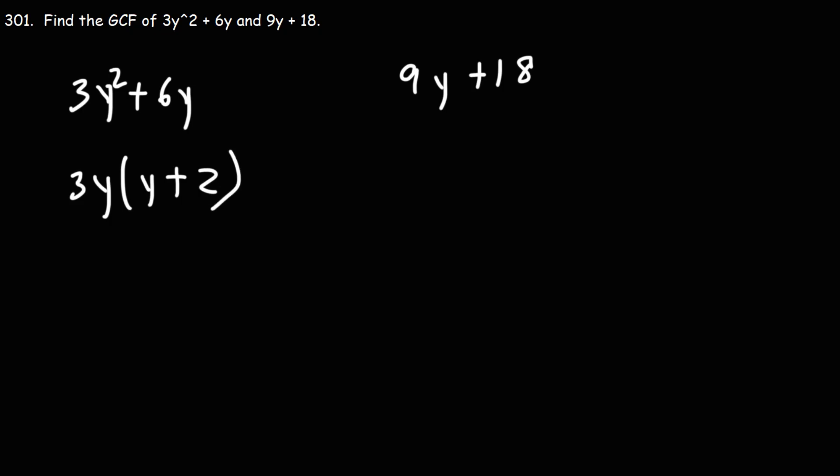Now, if we factor everything we can from this, we could take out a 9. So 9y divided by 9 is y, 18 divided by 9 is 2.